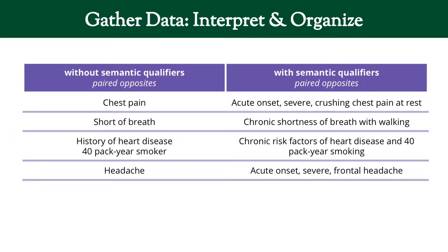Here are some examples of complaints without and with semantic qualifiers. Instead of just saying 'chest pain,' you could say 'acute onset severe crushing chest pain at rest.' Instead of just saying 'headache,' you could say 'acute onset severe frontal headache.' This gives more description, allowing us to use that data when making and evaluating our differential diagnoses — that is, our hypotheses.